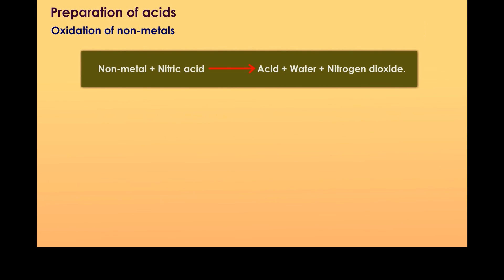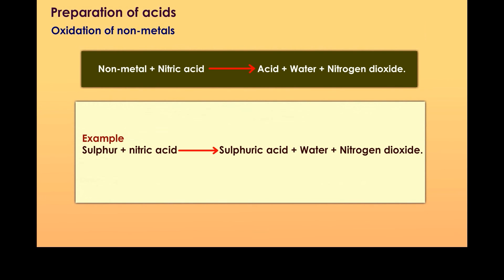Oxidation of non-metals. Non-metal plus nitric acid gives acid, water and nitrogen dioxide. Example: Sulfur plus nitric acid gives sulfuric acid, water and nitrogen dioxide.